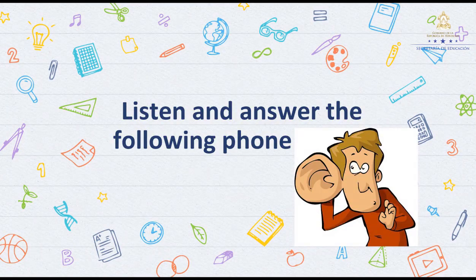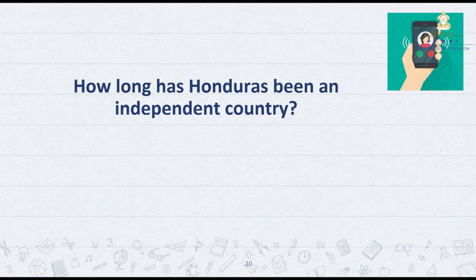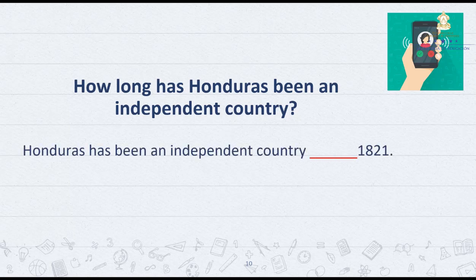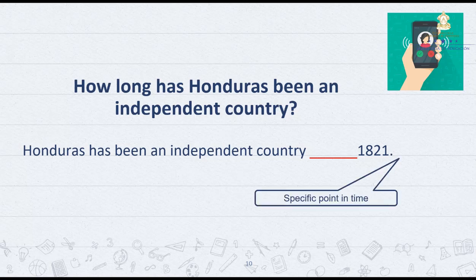It's your turn to listen and answer the following phone survey. How long has Honduras been an independent country? Honduras has been an independent country since 1821. 1821 is a specific point in time, so we use 'since'. Honduras has been an independent country since 1821.